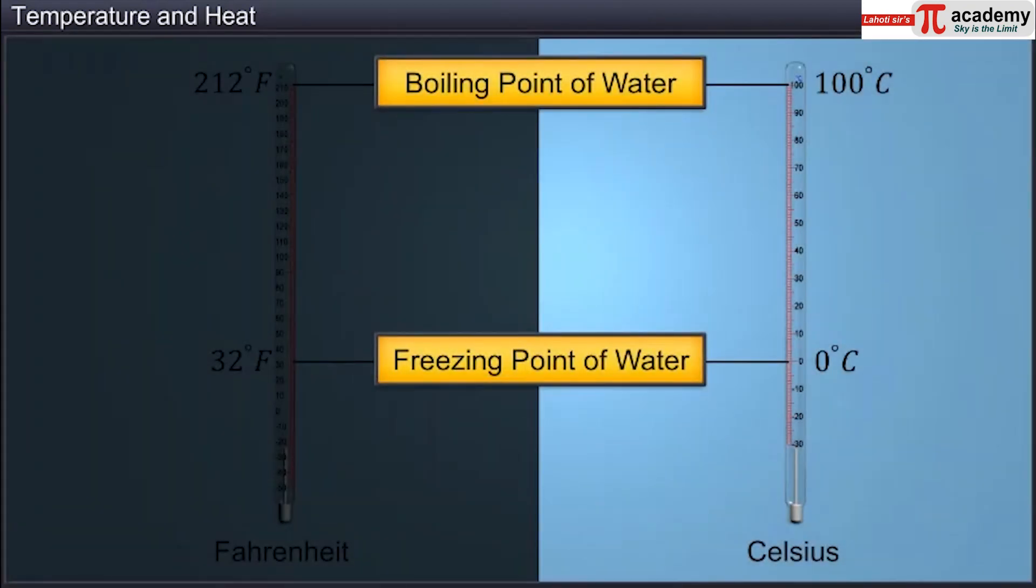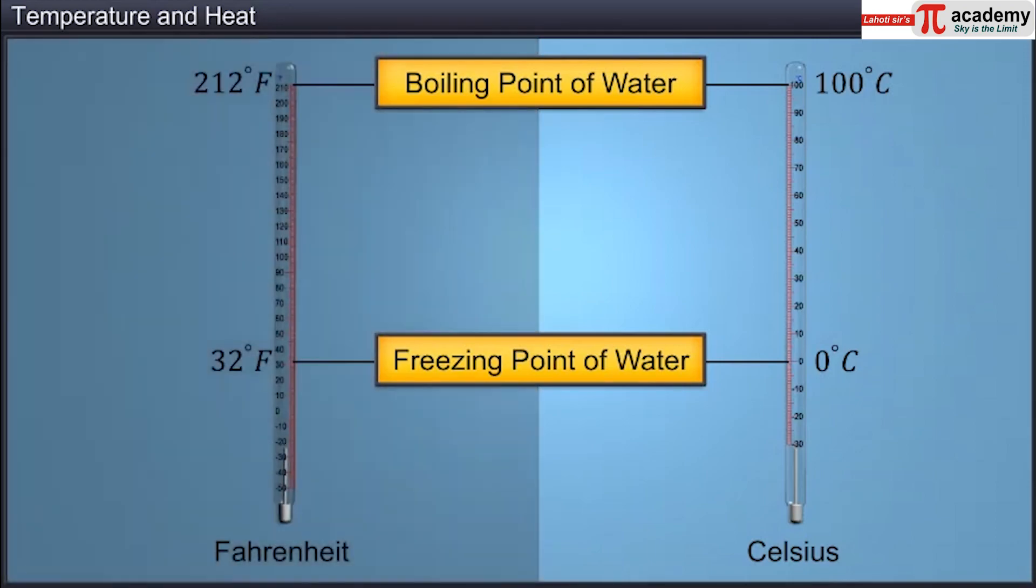In the Celsius scale, freezing and boiling points of water are taken as 0 degrees Celsius and 100 degrees Celsius respectively. In the Fahrenheit scale, they are taken as 32 degrees Fahrenheit and 212 degrees Fahrenheit respectively.